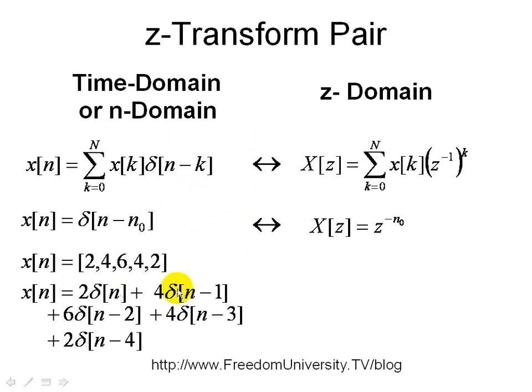Now let's find the z-transform. The first term is simply 2. With a delay of 1, we get 4z^-1. For the 6 with delay 2, we have 6z^-2. Then 4 with delay 3 gives 4z^-3, and 2 with delay 4 gives 2z^-4. That's how you convert this sequence into a polynomial of z^-1: X[z] = 2 + 4z^-1 + 6z^-2 + 4z^-3 + 2z^-4.